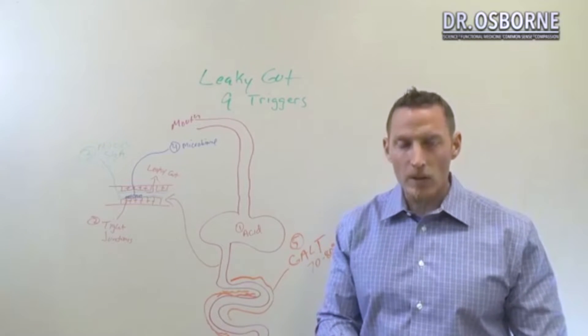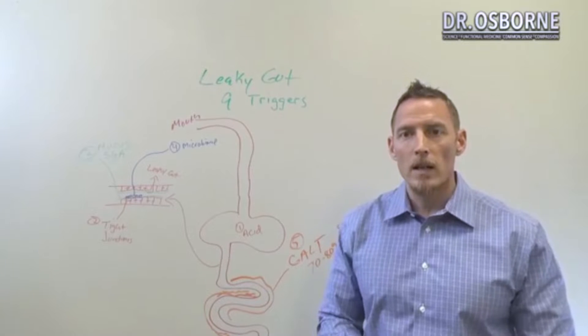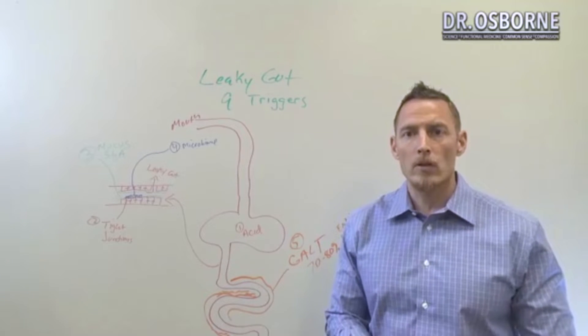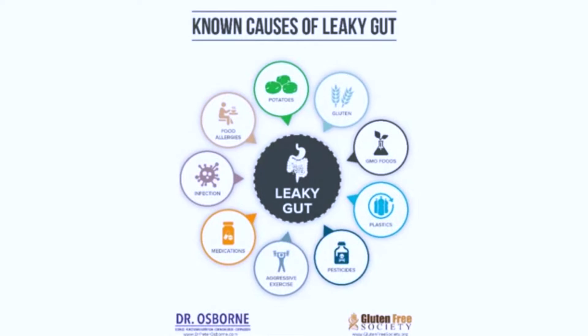There are at least nine, and actually I'm going to talk about a few more than nine tonight, but there are nine fundamental triggers for leaky gut that I want you to understand. Because if you are doing these things, then you will actually create a problem within one of these five firewalls, within one of these areas.